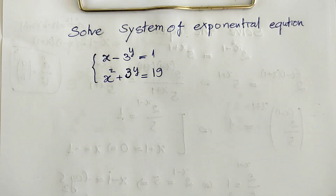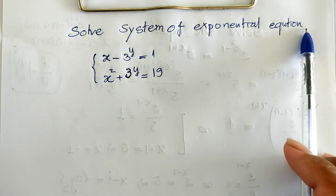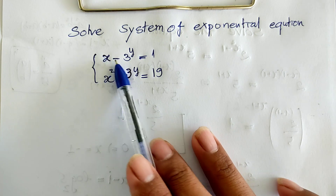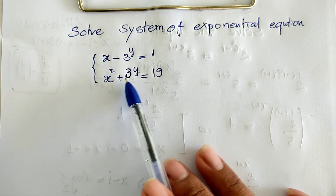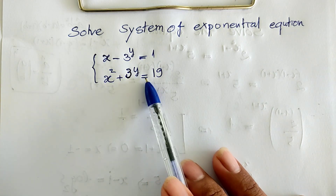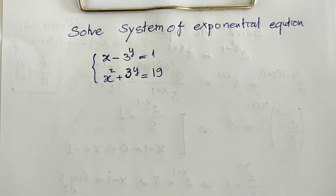Hello everyone, welcome to my YouTube channel. Today I have an exercise on paper: solve a system of exponential equations. Our system is: h minus 3 to the power y equals 1, and h squared plus 3 to the power y equals 19. If you know how to solve this, redo it. When you're done, come back to watch my video from beginning to end to verify your solution. Please don't forget to subscribe to my channel for more exciting videos. Now let's go to the solution together.